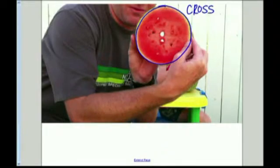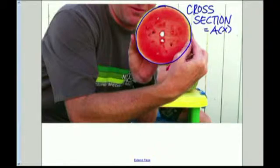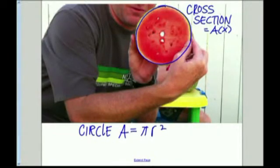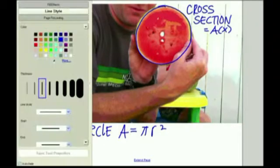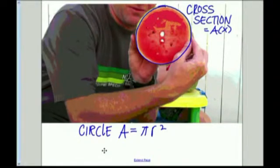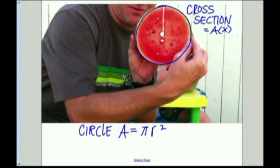And this is what they're always referring to as A and x in the equations that we use to calculate this stuff. And, of course, for this one, because it's a circle, area is going to be pi r squared, right?